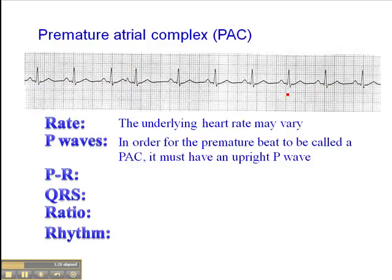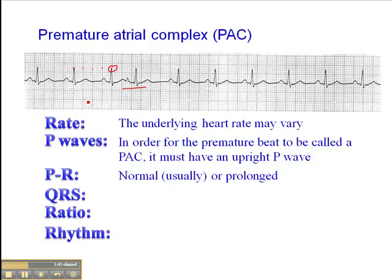The underlying rhythm appears to be sinus in origin. The heart rate here — we'll take this one which falls on a dark complex — the heart rate is 300, 150, 75. So we have a sinus rhythm of 75 with a premature atrial complex.